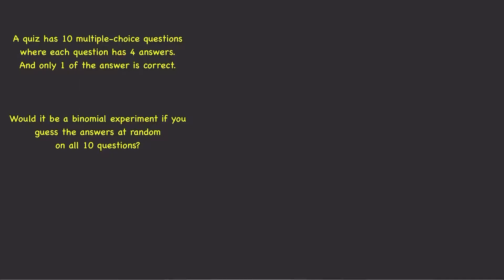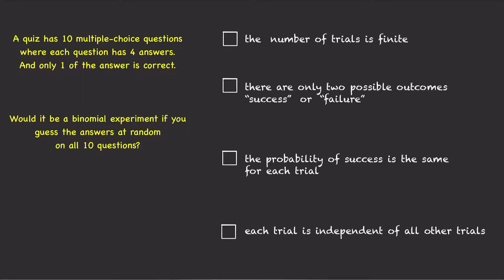To see if this is a binomial experiment, we have to see if it satisfies all four binomial conditions. The first condition is satisfied because the number of trials is finite. Here, the number of trials is n equals 10, since you are guessing the answer for 10 questions.